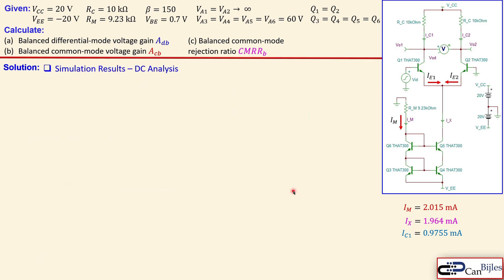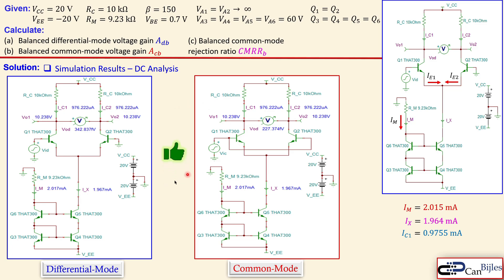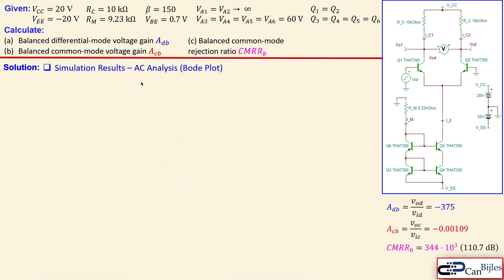Now let's look at the simulation results. Starting with the DC analysis for both differential mode and common mode configurations, the simulation shows Im equal to 2.017 milliamps, which is close to our calculated value. Ix equals 1.967 milliamps, also very close, and IC1 equals 0.9762 milliamps, again very close. IC1 and IC2 are exactly equal, and the DC operating point is identical for both differential and common mode configurations — verified.